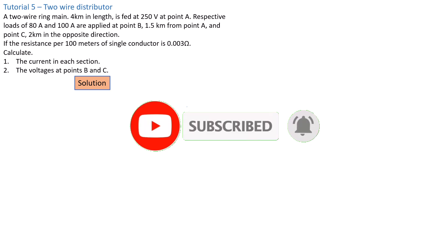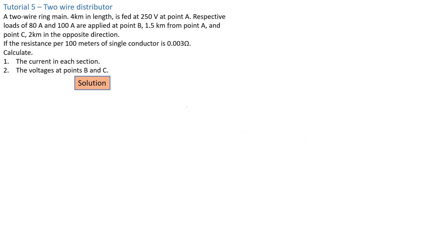In this tutorial, we're going to once again discuss a two-wire distributor system. The problem statement is that we've got a two-wire ring main that is four kilometers in length. We have 250 volts fed at point A, with loads connected from point B at 1.5 kilometers carrying 80 amps, and at point C at 2 kilometers in the opposite direction carrying 100 amps. The resistance per 100 meters of a single conductor is 0.03 ohm, that is 3 milli-ohm per 100 meters.